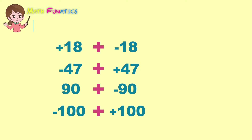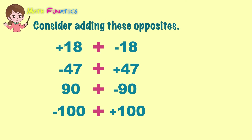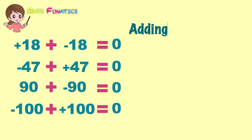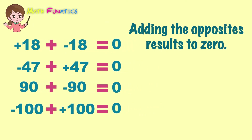What if we consider adding these opposites? Positive 18 plus negative 18 will result to 0. Negative 47 plus positive 47 equals 0. Positive 90 plus negative 90 also results to 0. Even negative 100 plus positive 100 is equal to 0. With this, we can conclude that adding or combining opposites together always results to 0.